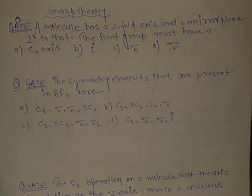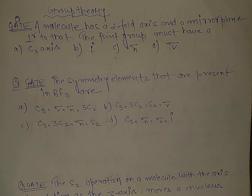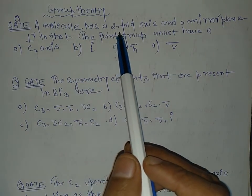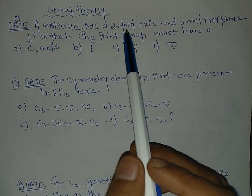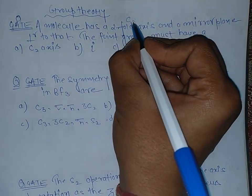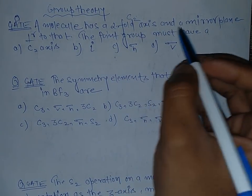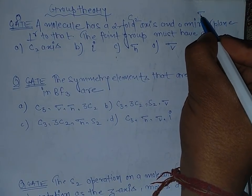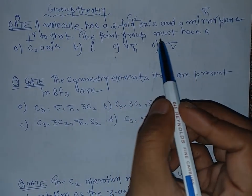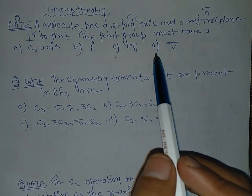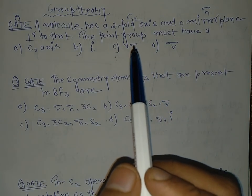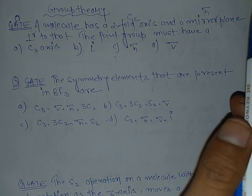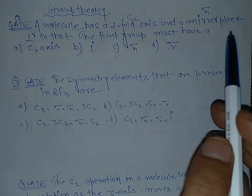Start with the first question. There is a molecule which has a two-fold axis, that means C2, and a mirror plane perpendicular to that, that means we have a sigma h plane. The point group must have what? Many people think that there is a mirror plane, that means sigma h is there, and they tick the C option.